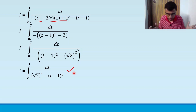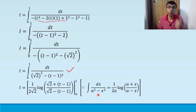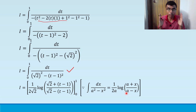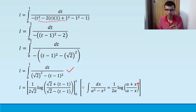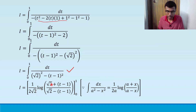This is of the form integral of dx / (a² - x²) = (1/2a) log |(a + x)/(a - x)| + C. Here a = √2 and x corresponds to (t - 1). So I = (1/2√2) log |(√2 + (t-1)) / (√2 - (t-1))| evaluated from 0 to 1.